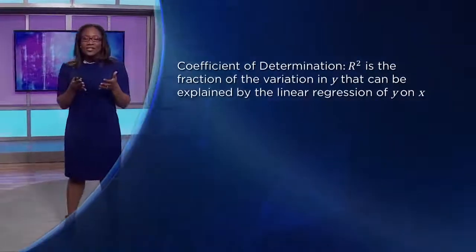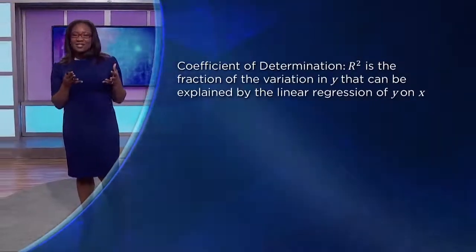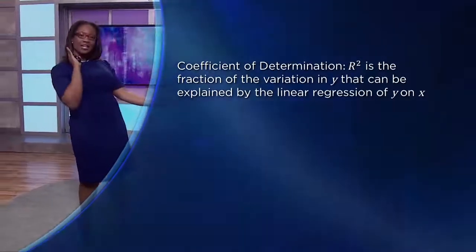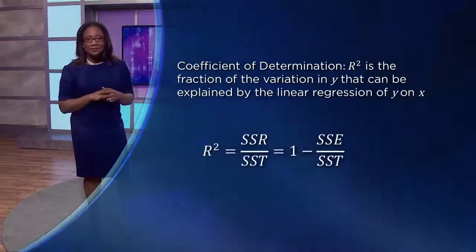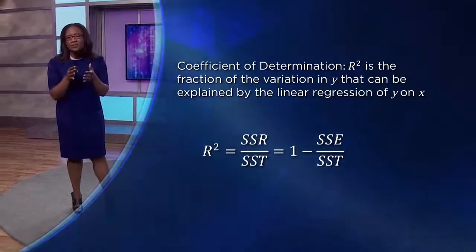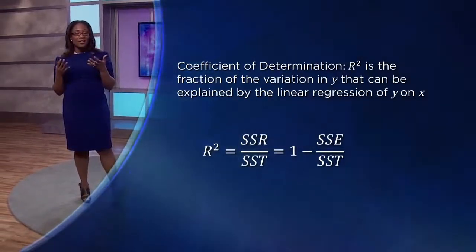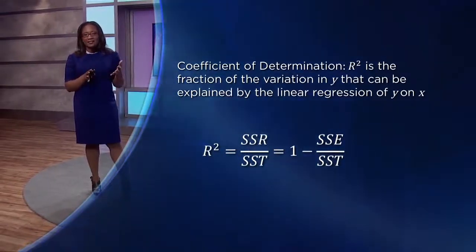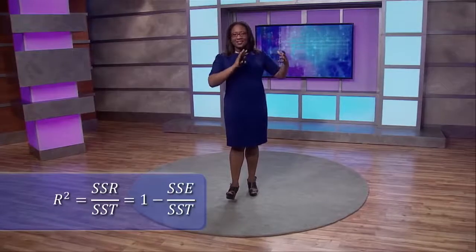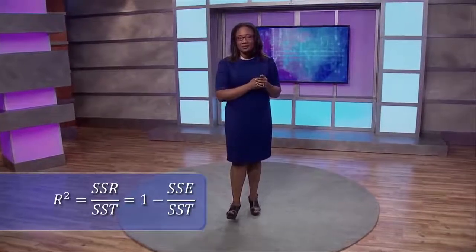We use the coefficient of determination, R², which gives us a measure of what fraction of the variation in y can be explained by the linear regression on x. R² = SSR / SST, or equivalently 1 − SSE/SST. If the regression model is a really good fit, SSR will be big relative to SST, giving a high R². If the regression doesn't give much information, SSR will be lower and more information is in SSE, giving a lower R². An R² of zero means y can't be predicted linearly from x; an R² of one means y can be predicted from x without any error.